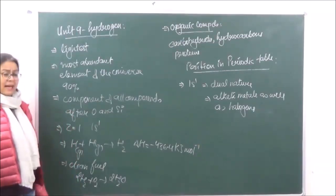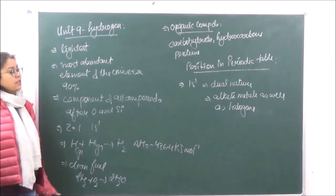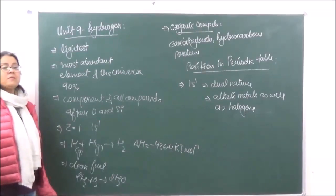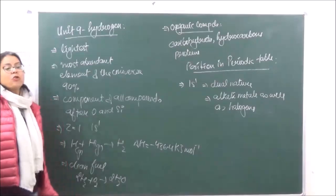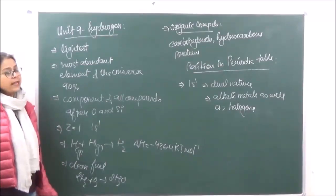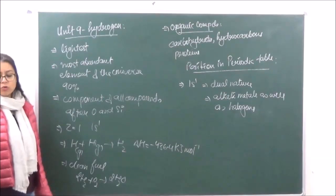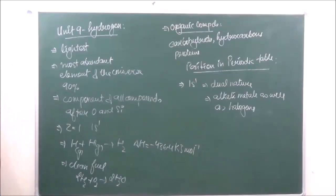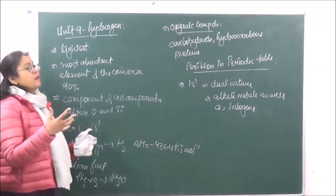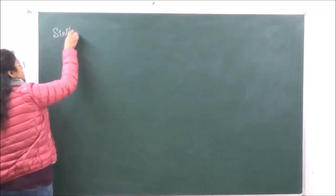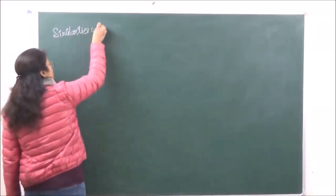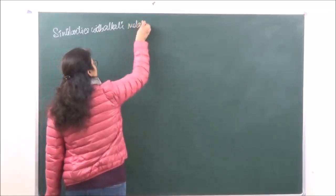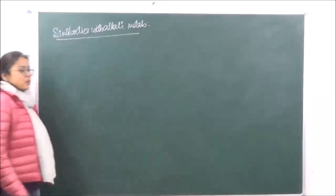Sometimes it is placed with the alkali metals, sometimes it is also placed with the halogens. Sometimes it can behave as an electro-positive element and sometimes it also behaves as an electro-negative element. Let's go on to, first of all, the similarities and differences between alkali metals and Hydrogen — that will make the study of Hydrogen much easier.